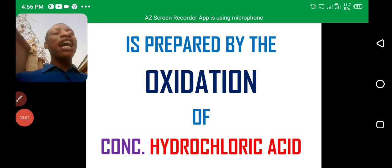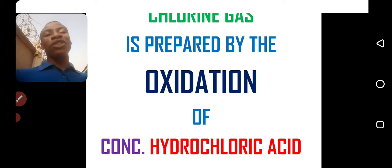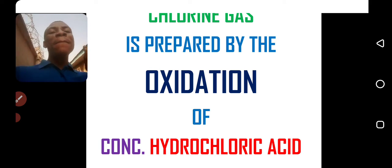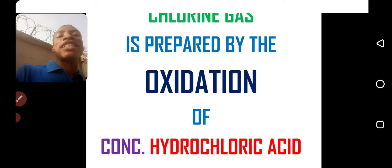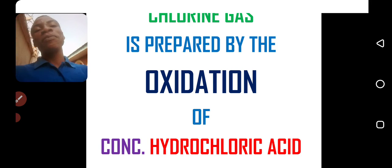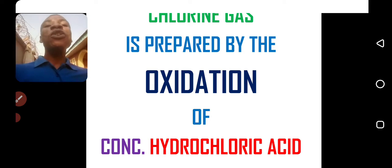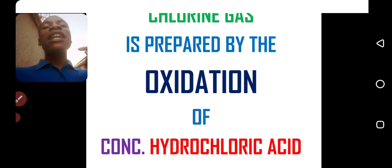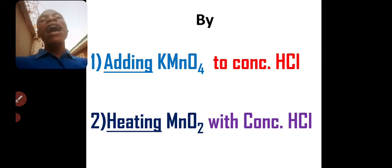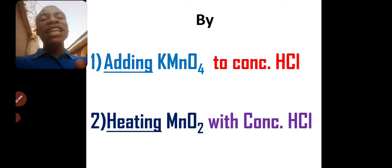In this video we're looking at the preparation of chlorine gas. There are two methods of preparing chlorine gas, and both methods involve the oxidation of concentrated hydrochloric acid. It is by oxidizing concentrated HCl that you liberate chlorine gas. Method one is by adding KMnO4 to concentrated HCl.